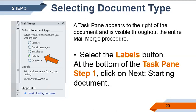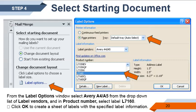That is how you can create a label. A label is used for labeling a certain product. Step four, select starting document. From the Label Options window, select Avery A4 or A5 from the drop-down of label vendors. And in product number, select label L7160. Click OK to create a sheet of labels with the specific label information.